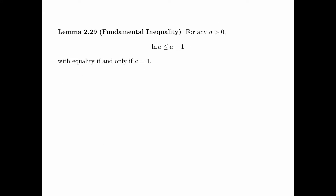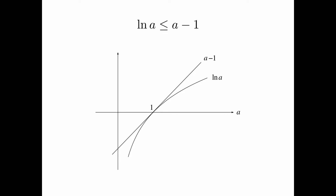Lemma 2.29 is an extremely important inequality in information theory called the fundamental inequality. It says that for any a > 0, log a is less than or equal to a minus 1, where the logarithm is the natural logarithm, with equality if and only if a equals 1. Instead of giving a formal proof, this inequality can be seen to be true with a very simple plot. The x-axis is a, and it is clear that log a ≤ a − 1.